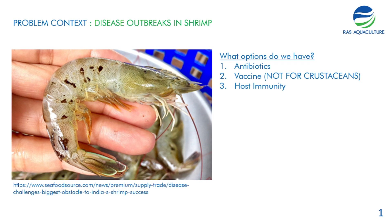This is a shrimp that is being infected by Vibrio. As you can see, the black lesions are on the shrimp. In the event of diseases, what can we actually do?